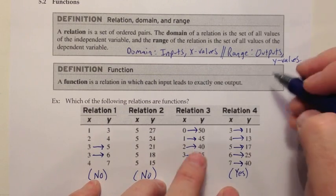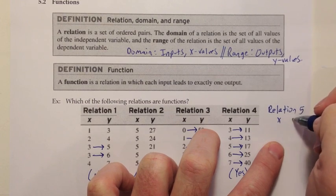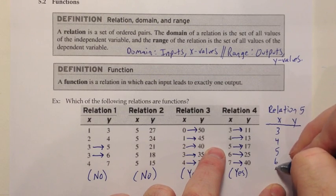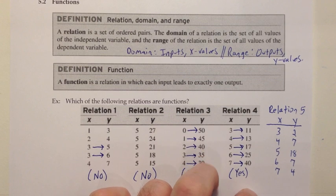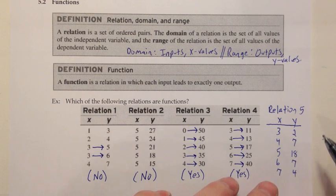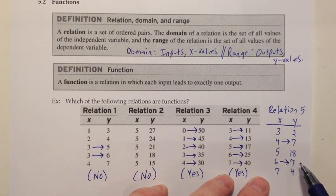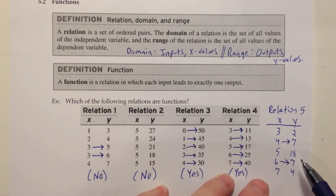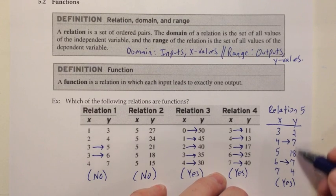I want to add another example — relation 5 — with an x-y table using the same inputs: 3, 4, 5, 6, 7, with outputs 2, 7, 18, 7, and 4. Is this a function? Sometimes people say no because they notice the two different 7s in the output and think we can't have repeats. But it's okay — two different inputs can go to the same output. For it to be a function, each input has to go to exactly one output. If an input goes to more than one place, that's the problem. So this is a yes, despite the repeated value in the range.